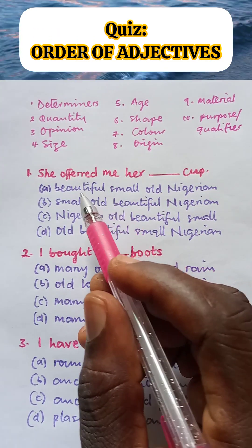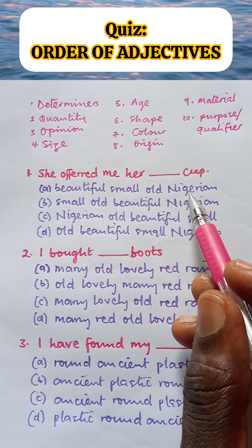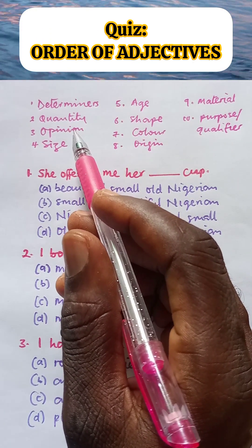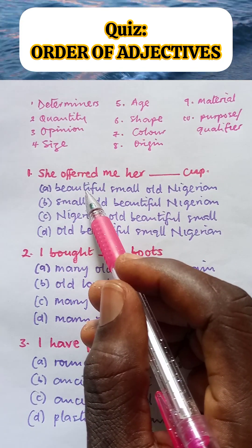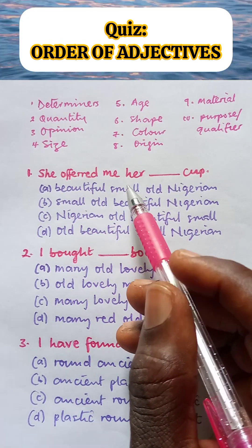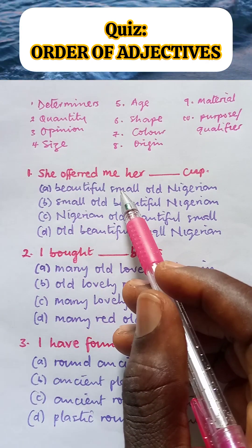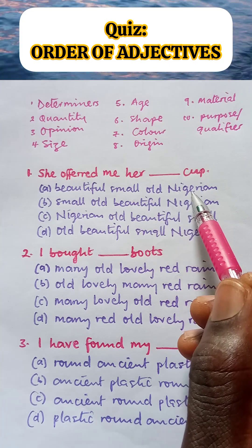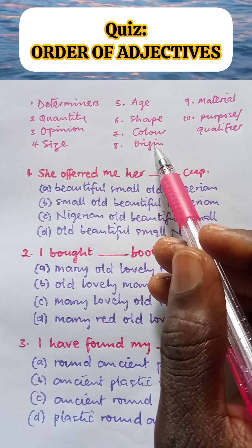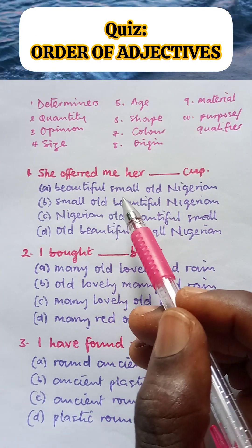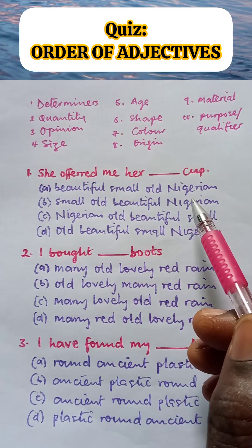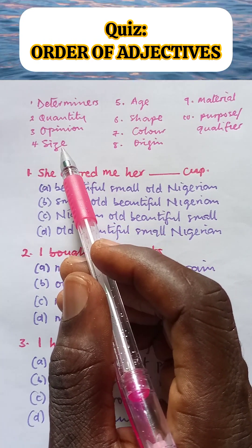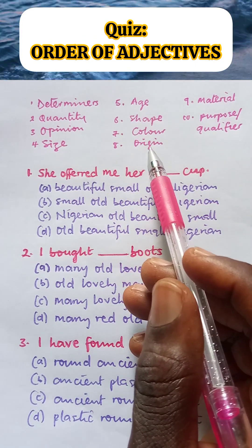Now let us look at the words. The words are beautiful, small, old, Nigerian. Beautiful falls under opinion — it is your opinion; to some others it can be ugly. Small falls under size. Old is under age. And Nigerian is under origin. So we have opinion, size, age, and origin. According to the order: opinion first, followed by size, and then age before origin.